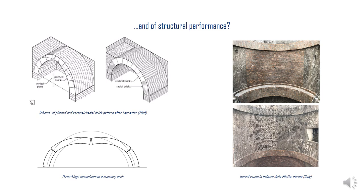The choice of vertical bricks, even if the formwork was used, can be explained considering that once every new course was closed, it began to act as an arch, therefore relieving the formwork below from part of the vault weight. This could have resulted in a smaller and cheaper wood structure. A further consideration could relate to the builder's perception of some structural advantage. The classic crack pattern consists in two hinges at the intrados, not visible from underneath, and one at the extrados at the crown. Builders observing this behaviour would have naturally perceived the crown as a weak point.